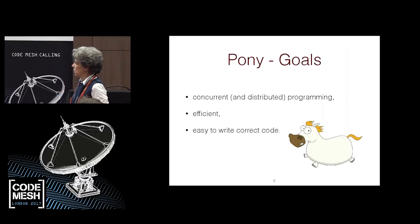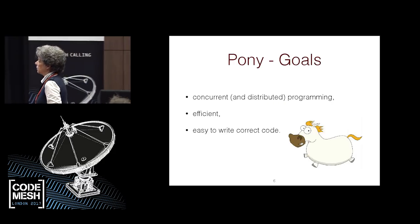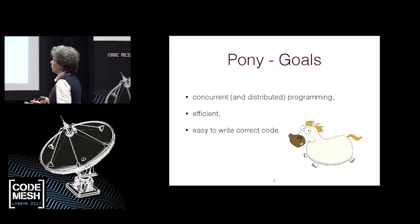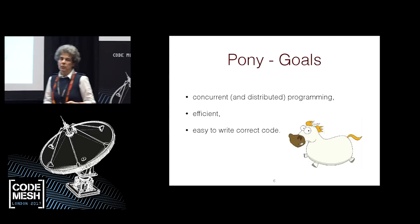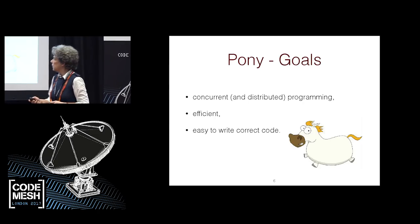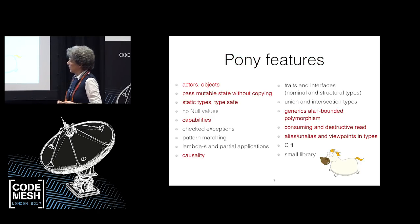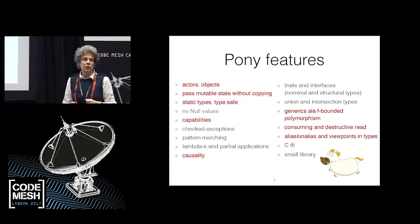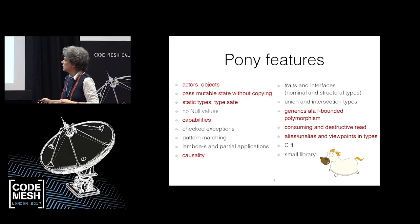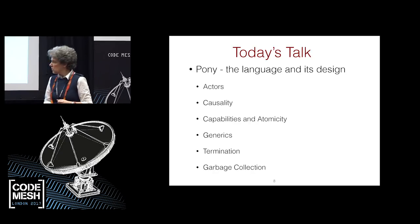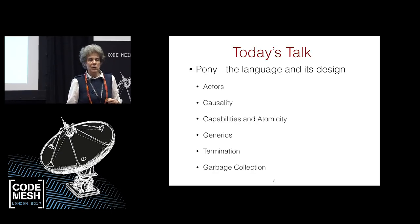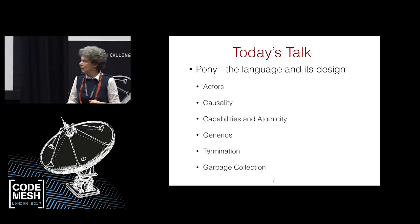Pony was developed with the aim to help you develop concurrent and also distributed programs, be efficient, and make it easy to write correct code. I'm going to talk about a couple of features in Pony: actors, causality, capabilities, generic termination, and garbage collection — or a subset thereof if I run out of time.